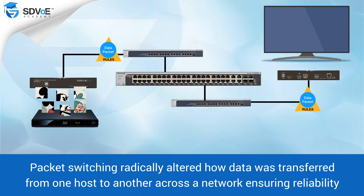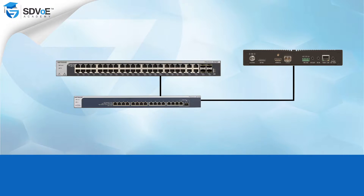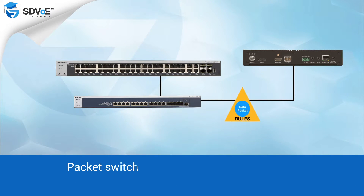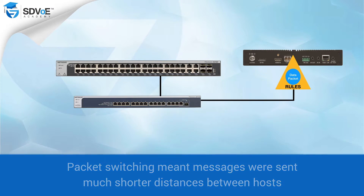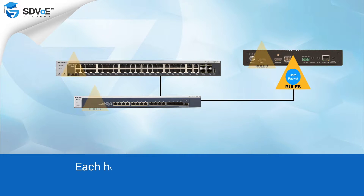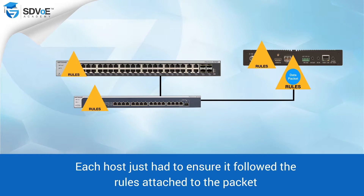Once the packets reached their destination, the receiving host or device was able to put them all together again to form the original message. Immediately there were huge benefits. Packet switching meant the messages were sent much shorter distances to intermediate hosts, which only needed to follow the rules which were attached to the packet rather than the packet itself.